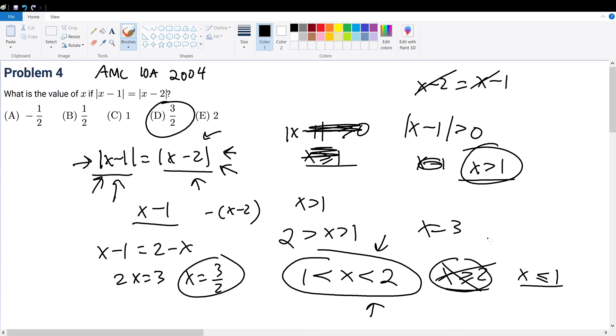What about x is less than or equal to 1? Well, if x is less than or equal to 1, then the right-hand side will be negative. So 1 minus x. But if x is less than or equal to 1, then that must mean this for the right-hand side will also be negative. So this would be 2 minus x.